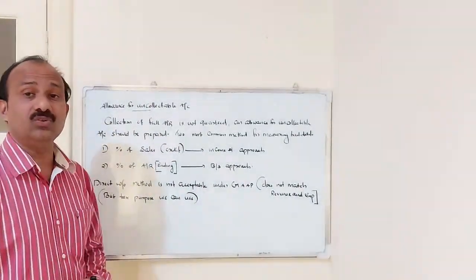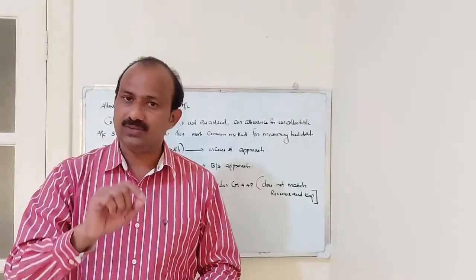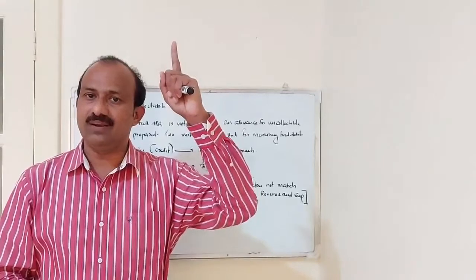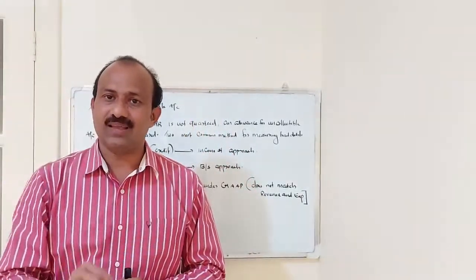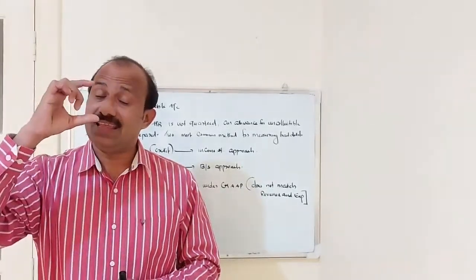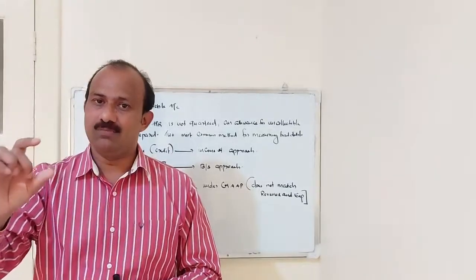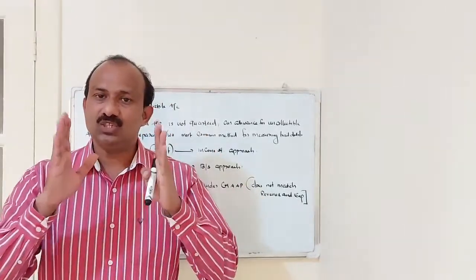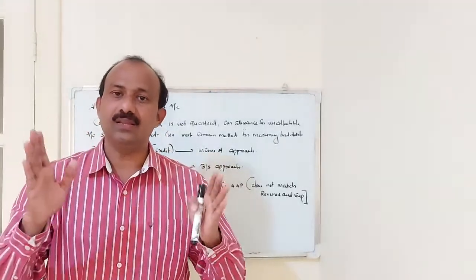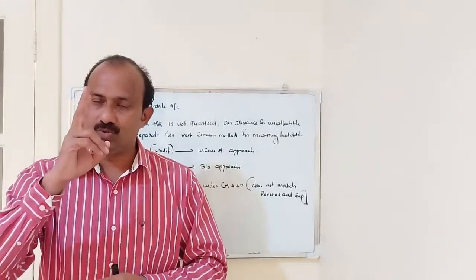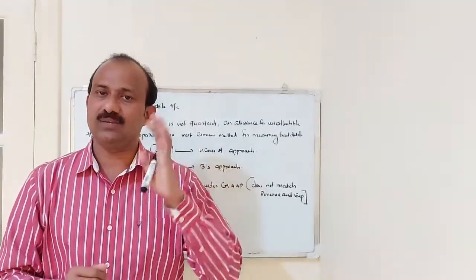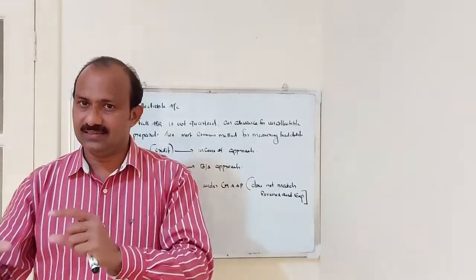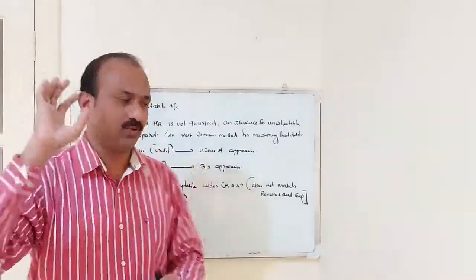Number two: percentage of accounts receivable. Sometimes you have to consider the percentage of accounts receivable. Since accounts receivable is a balance sheet item, this approach is known as the balance sheet approach — specifically, the percentage of the ending balance of accounts receivable. These two are the common methods for measuring bad debts in an organization: first, percentage of credit sales (income statement approach); second, percentage of ending accounts receivable balance (balance sheet approach).